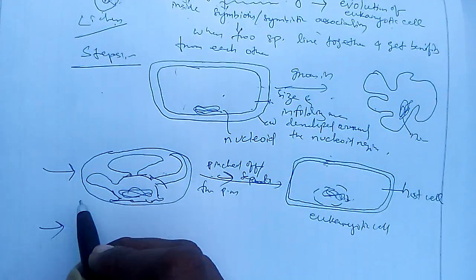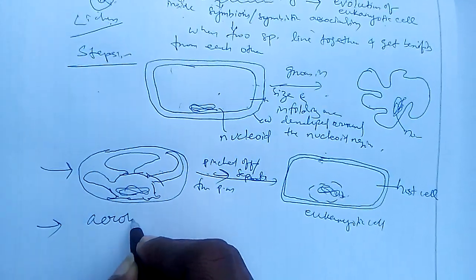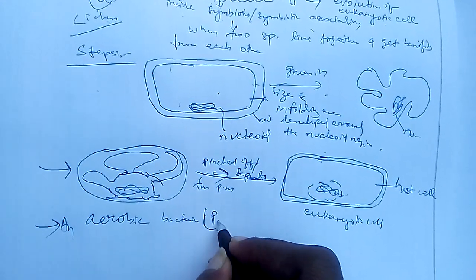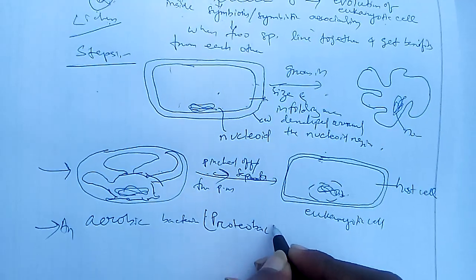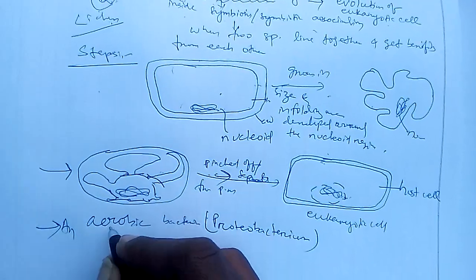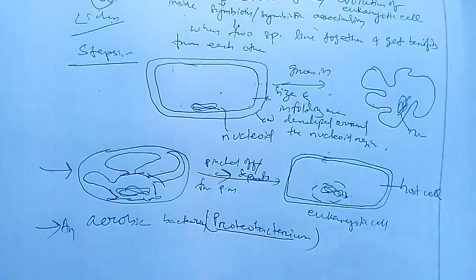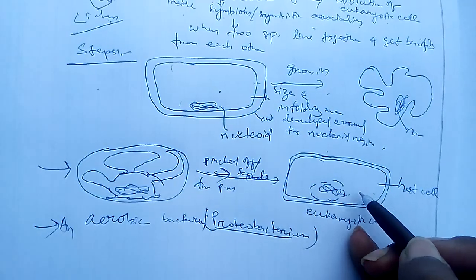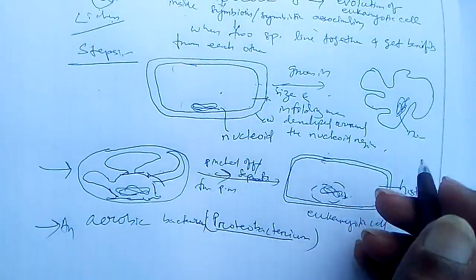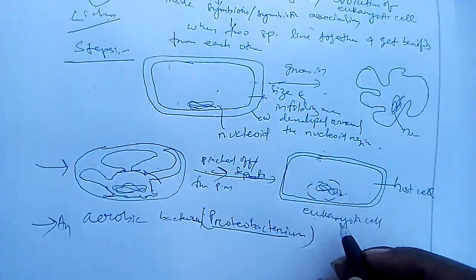In the next step, according to this endosymbiotic theory, an aerobic bacterium — a proteobacterium — enters into this eukaryotic host cell as prey or parasite, and manages to avoid any type of digestion or damage, surviving inside this host cell.